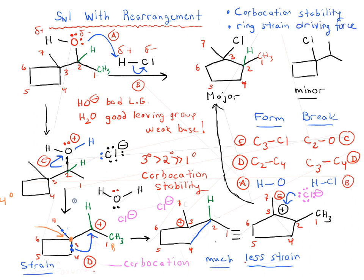So keep that in mind when you're doing SN1 and E1 reactions, that ring strain can also be an important factor, not only carbocation stability. So we'll do one more example of an SN1 reaction with a rearrangement, and then it'll involve some silver salts. So till next time.